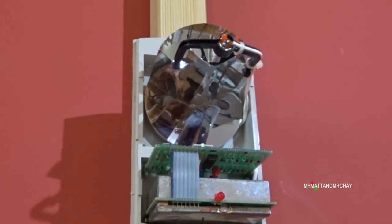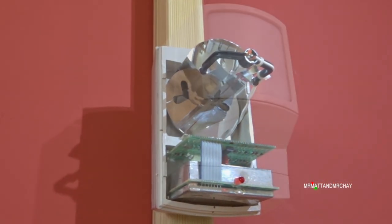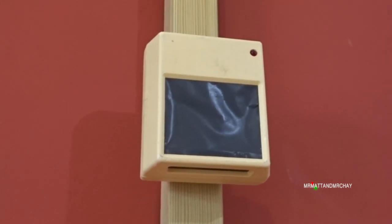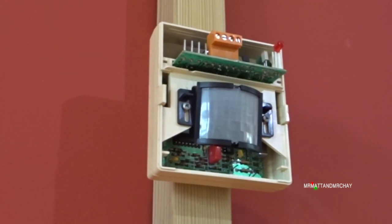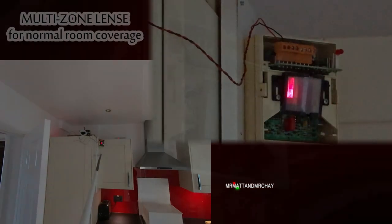There are different types of lenses. For most applications detectors have this multi-zone lens for normal room coverage. The upper part detects motion across the main part of the room.